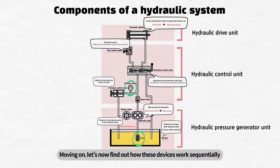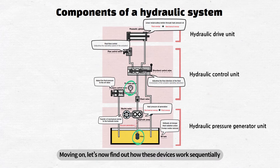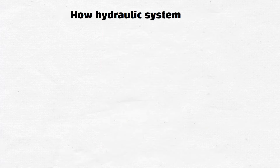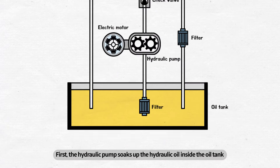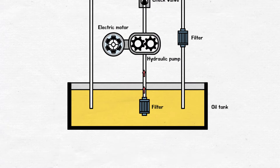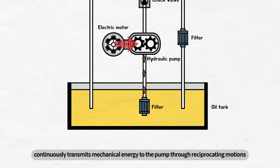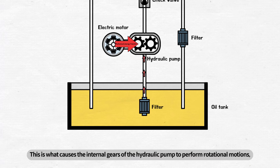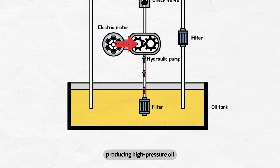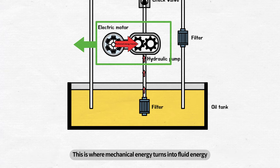Moving on, let's now find out how these devices work sequentially. First, the hydraulic pump soaks up the hydraulic oil inside the oil tank. At this point, an electric motor connected to the hydraulic pump continuously transmits mechanical energy to the pump through reciprocating motions. This causes the internal gears of the hydraulic pump to perform rotational motions, producing high-pressure oil. This is where mechanical energy turns into fluid energy.